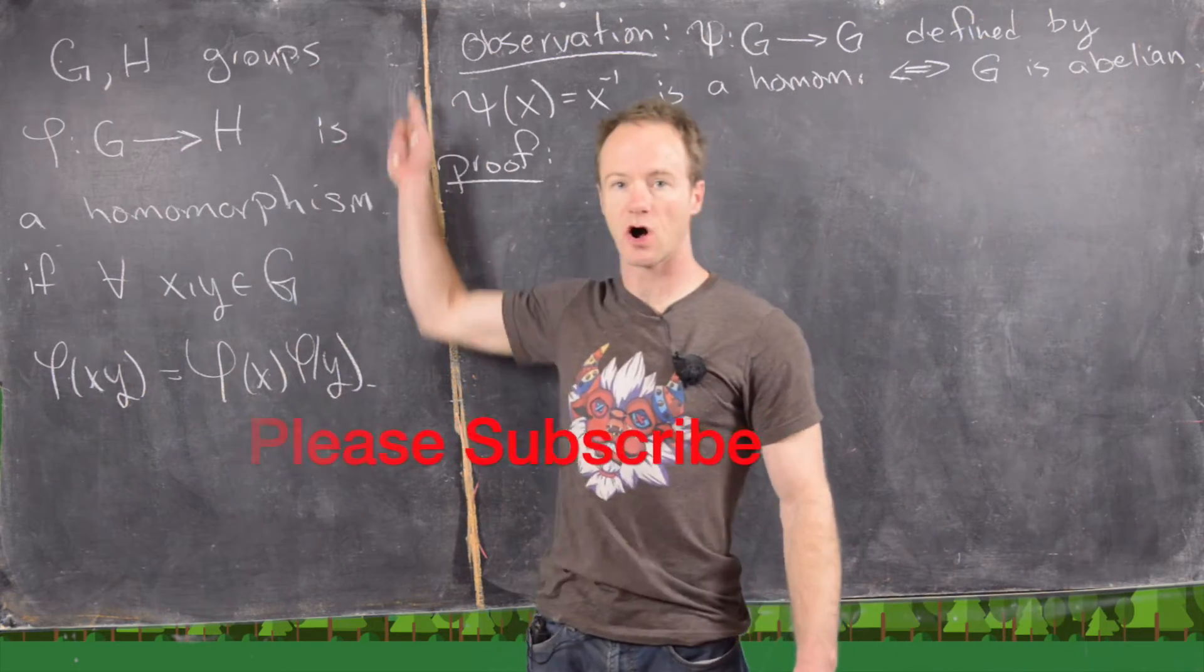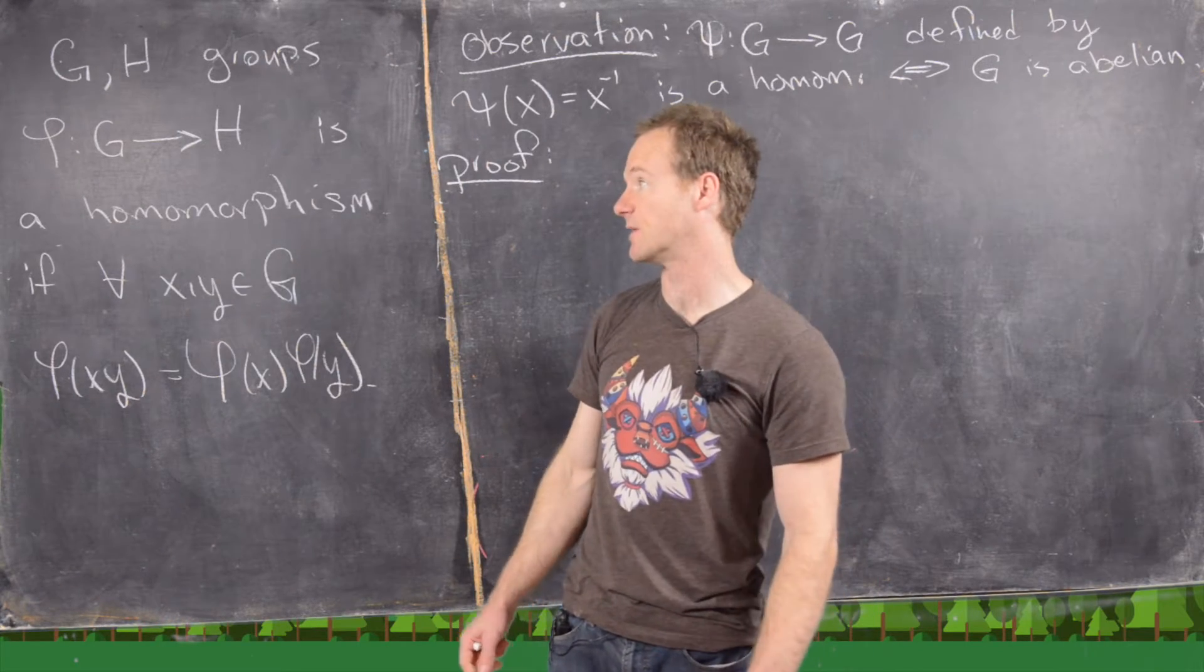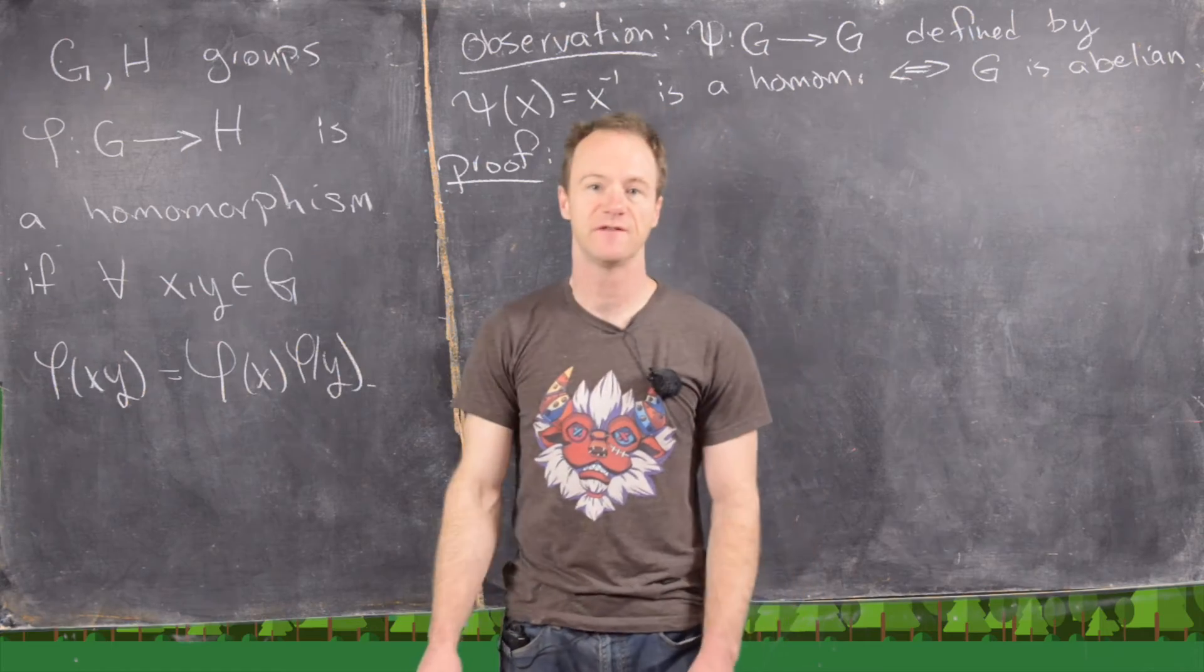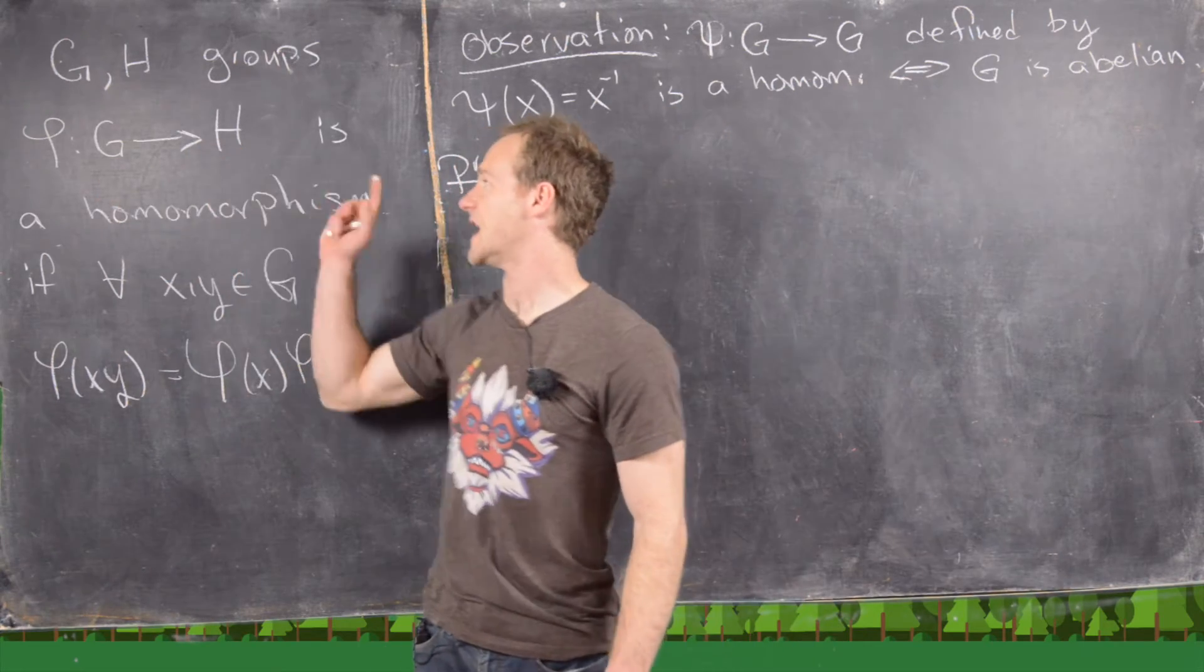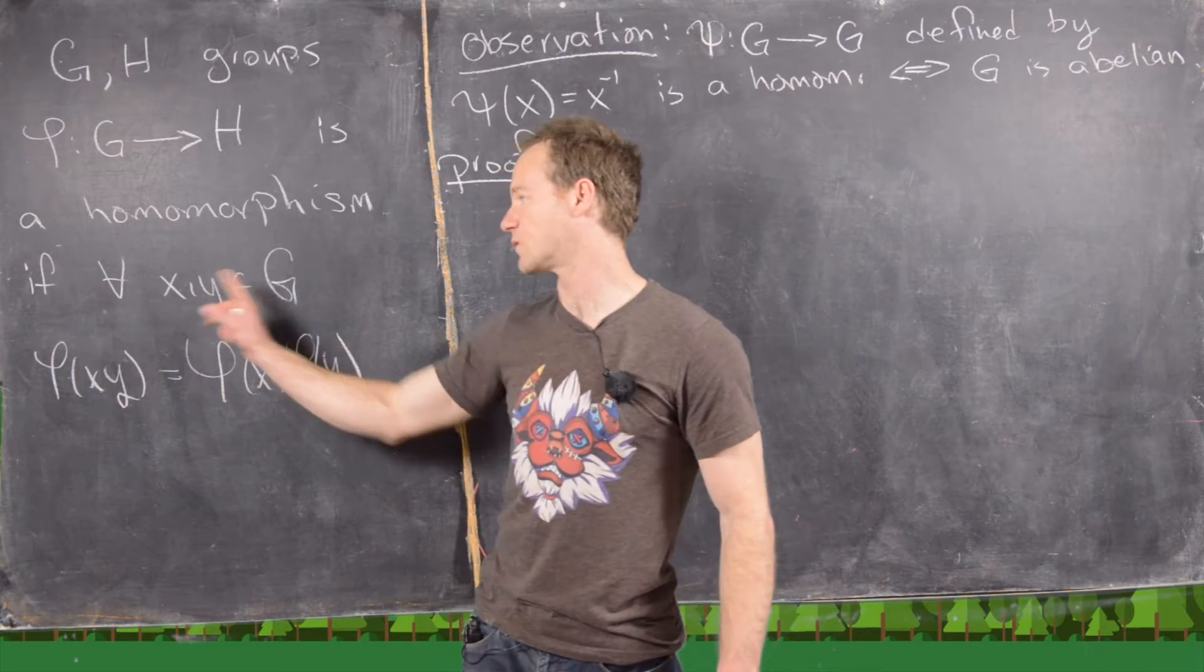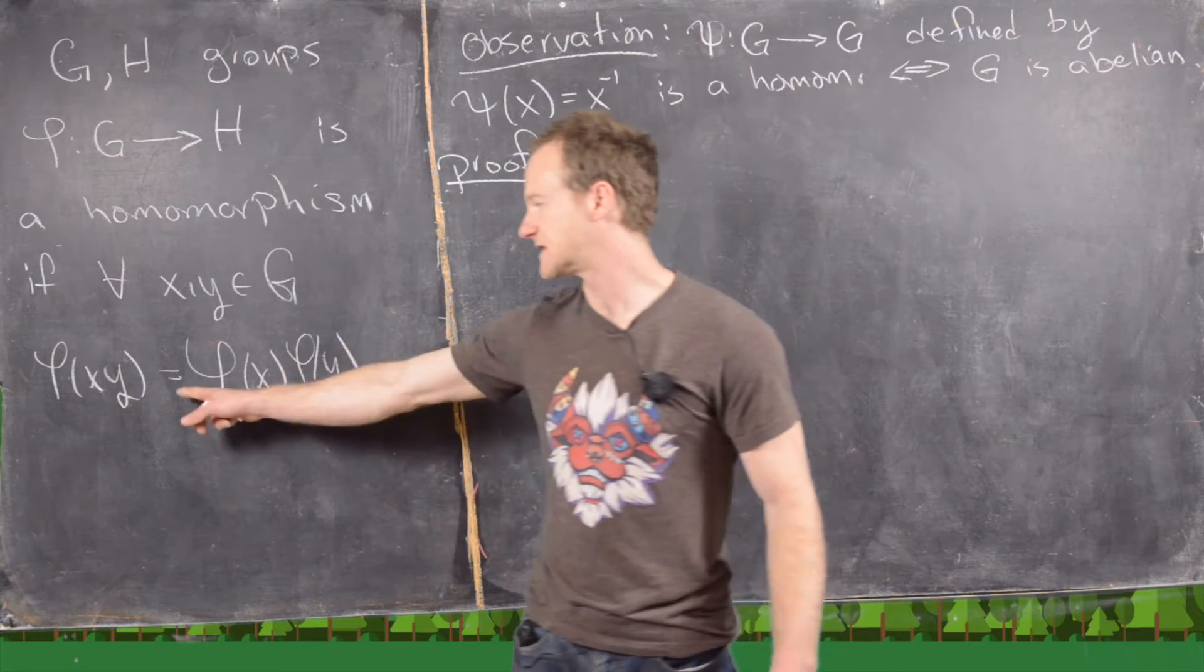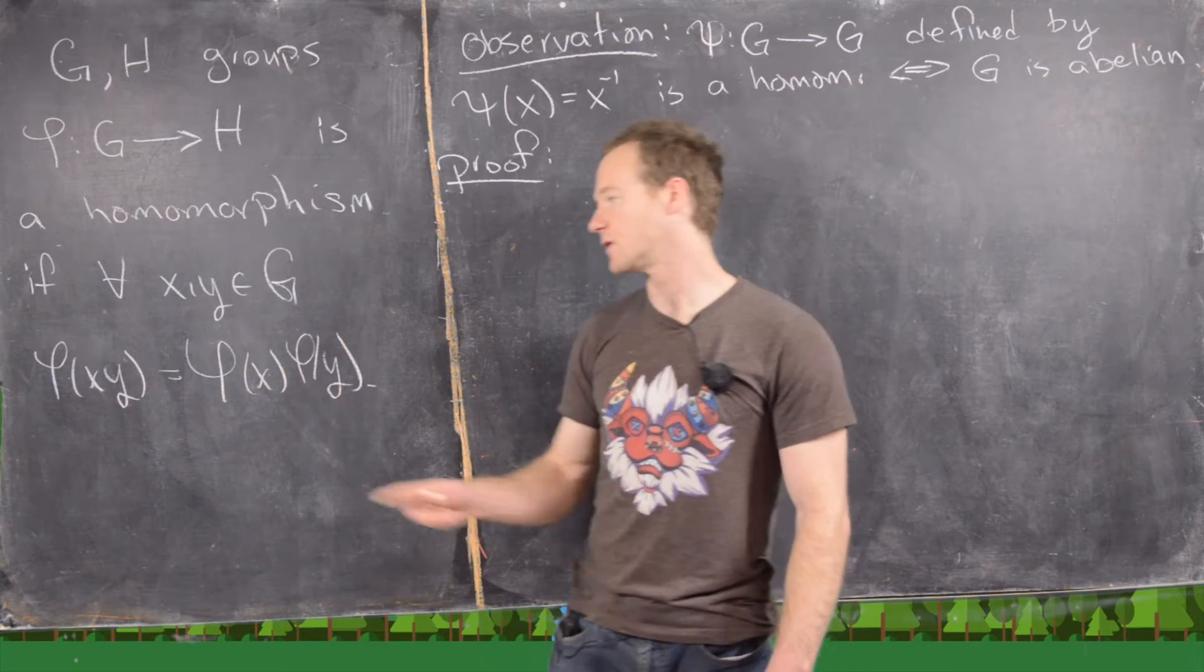Let's recall that if we have G and H are groups, they may be the same as we'll see in our example, that a function phi from G to H is called a homomorphism if for all x and y in G we have phi applied to xy is the same thing as phi of x times phi of y.